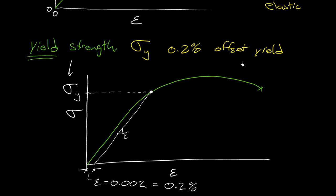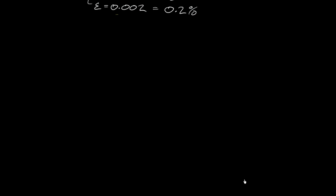And this is just a convention, right? There's nothing fundamentally important about 0.002 strain. It's just convenient. That's all there is to it. It's just a convenient value of strain. OK.